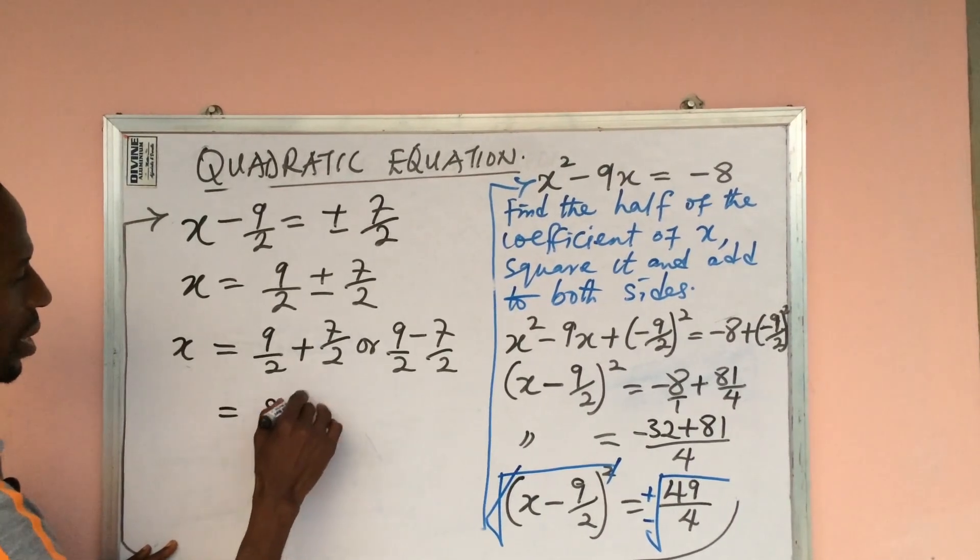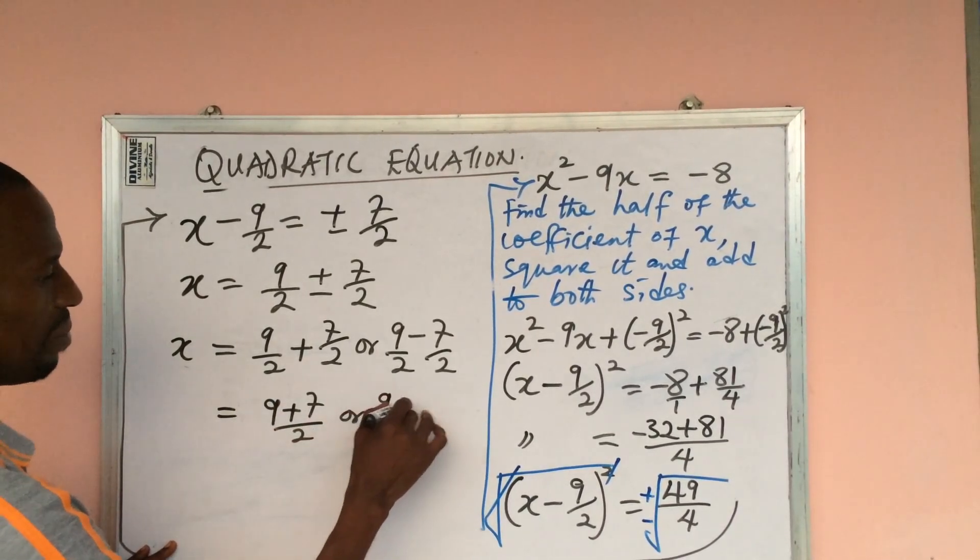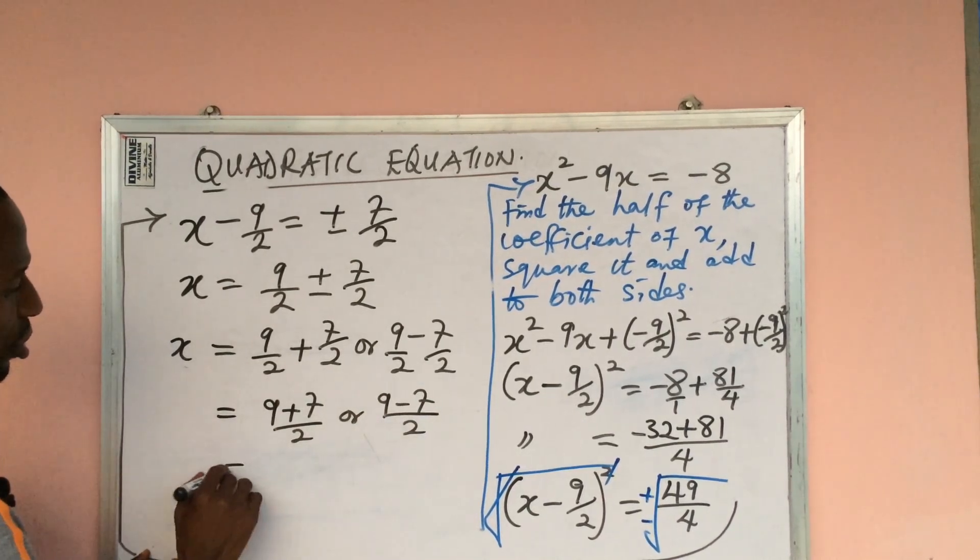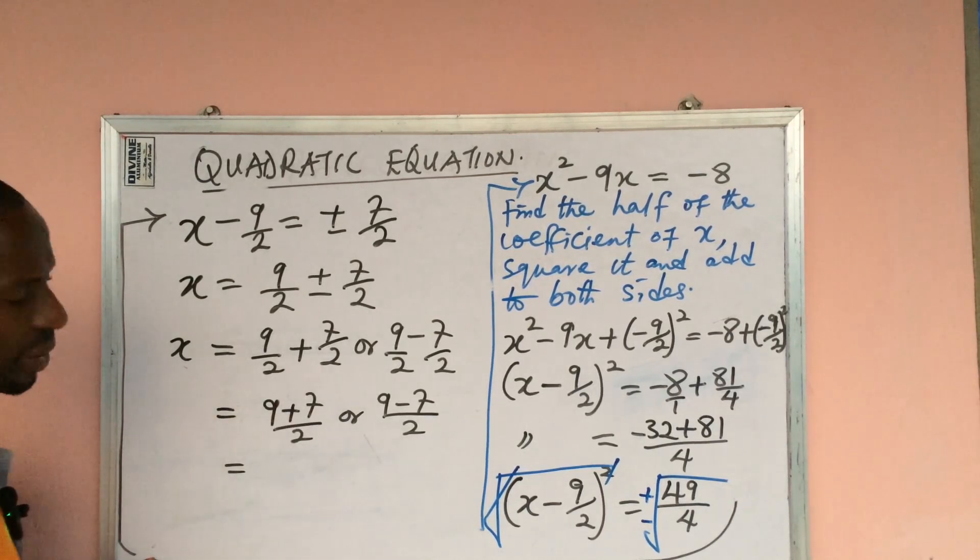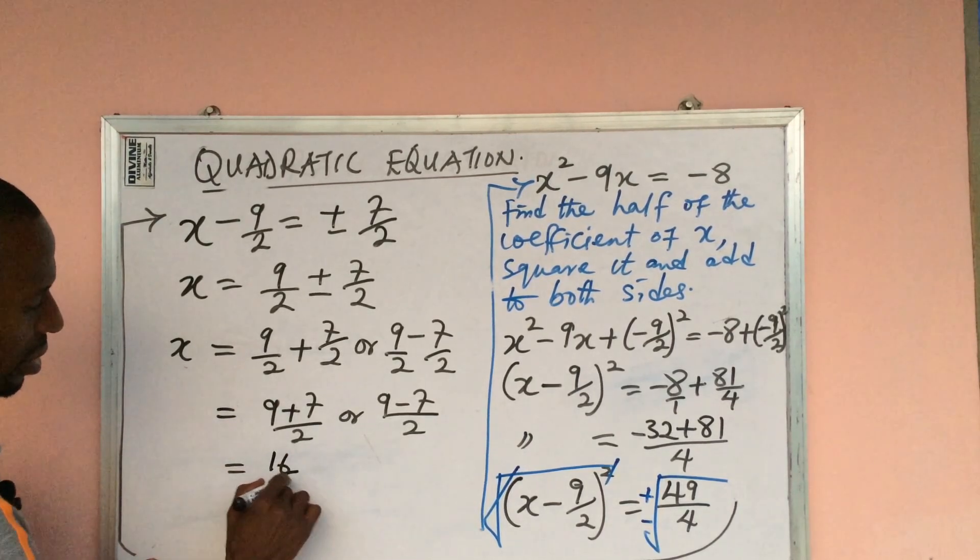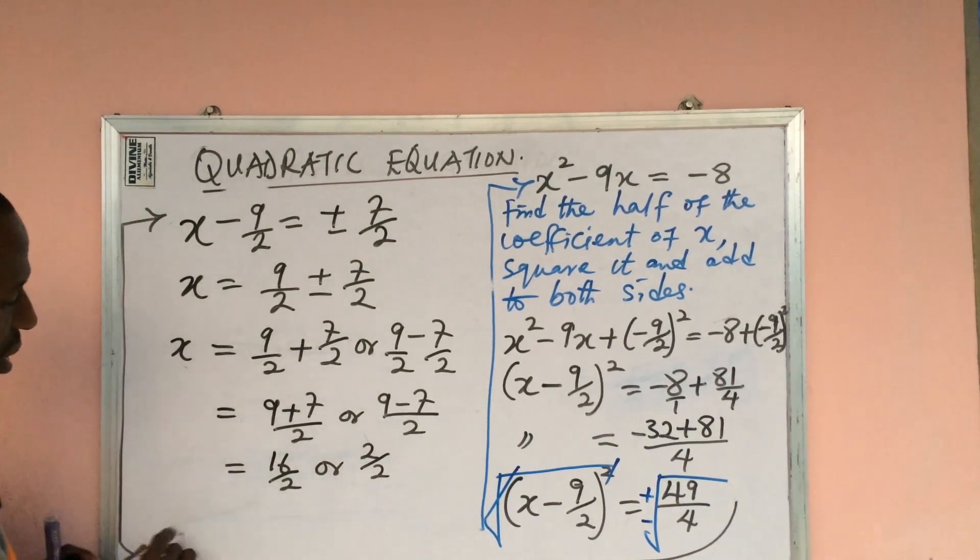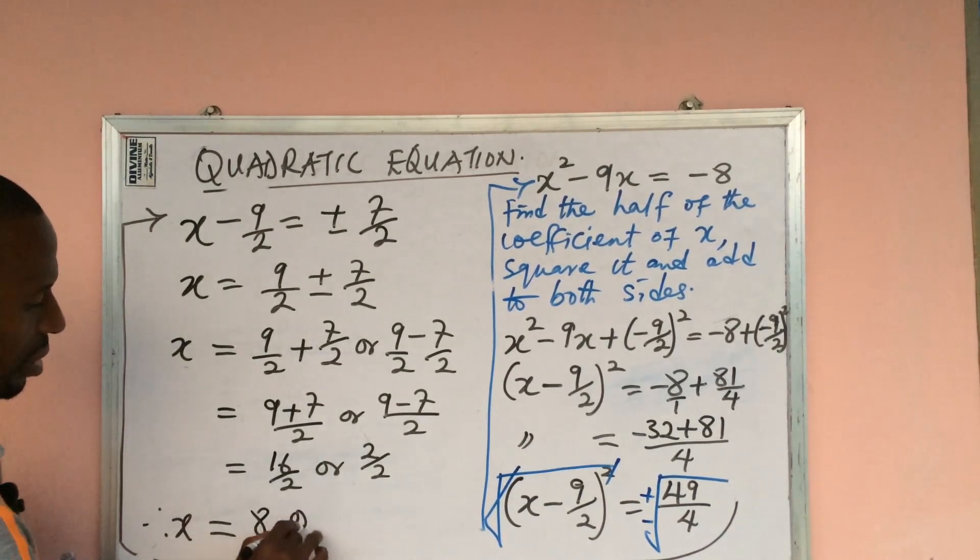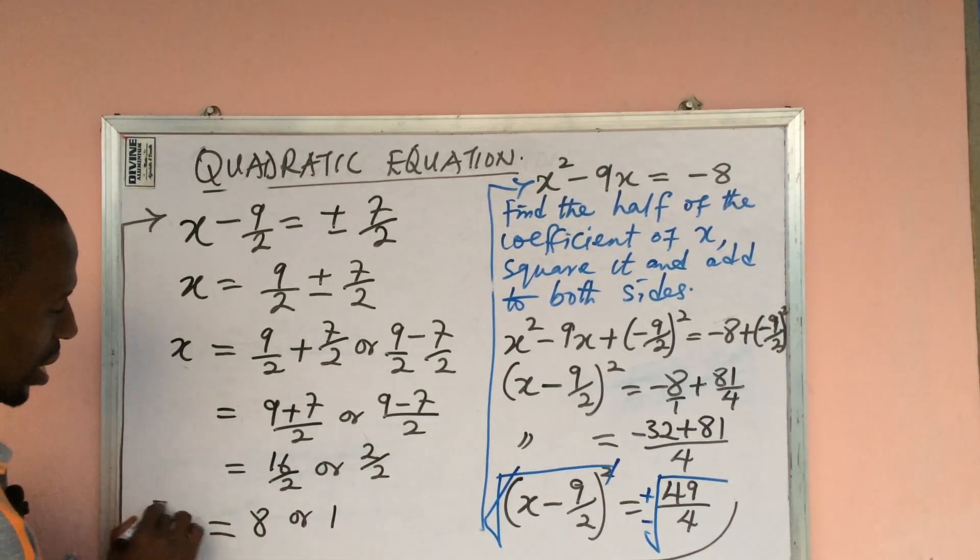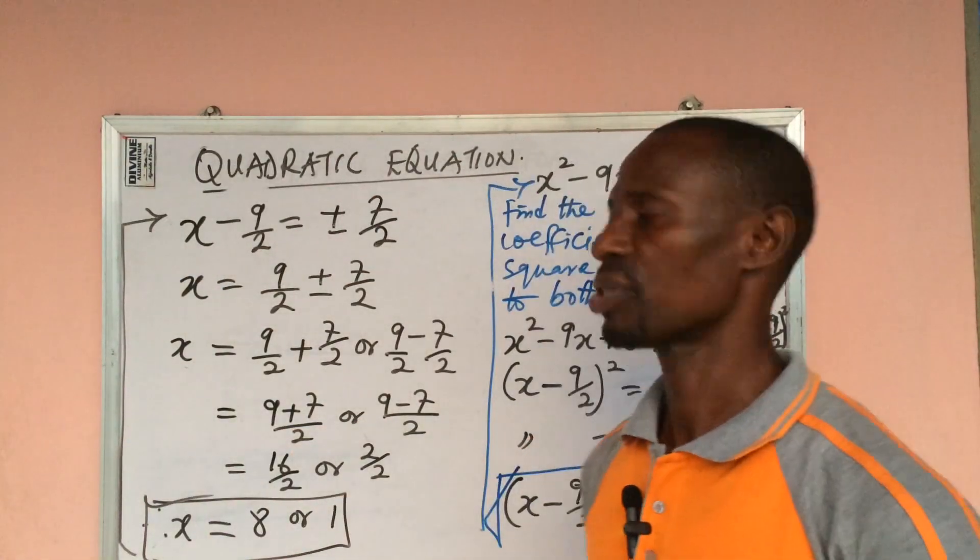We can find the result for both. This will give us (9 + 7)/2 or (9 - 7)/2. Automatically we now have 16/2 or 2/2. So if we divide down, we get x = 8 or x = 1. So this is the solution to this quadratic equation by completing the square method.